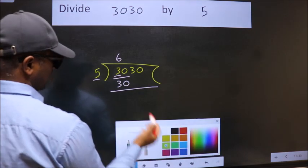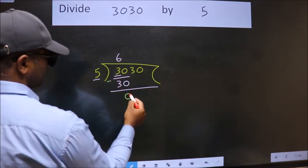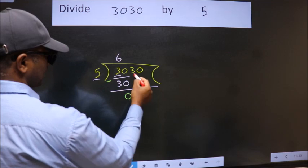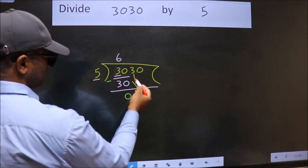Now, we should subtract. We get 0. After this, bring down the beside number. So, 3 down.